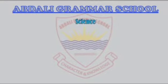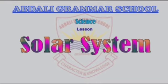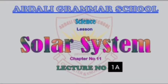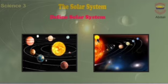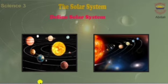Abdali Grammar School science lesson — Solar System, Chapter 11, Lecture 1A. Define solar system: the sun, the planets, and all the objects moving around the planets are collectively called the solar system.